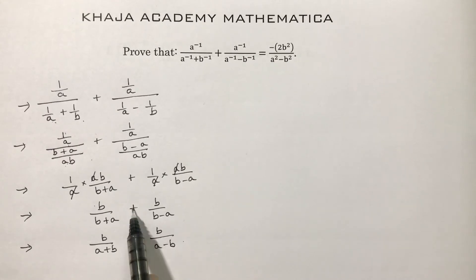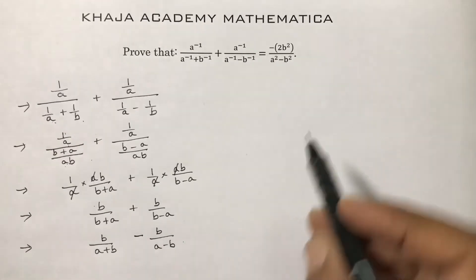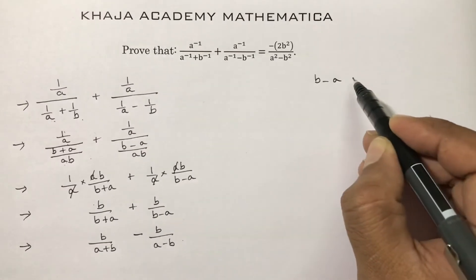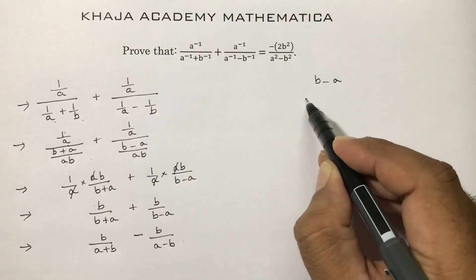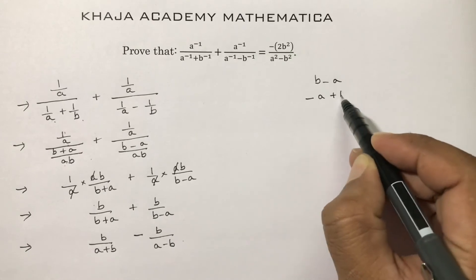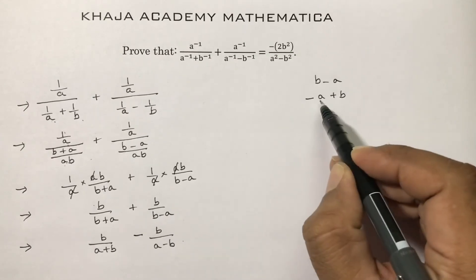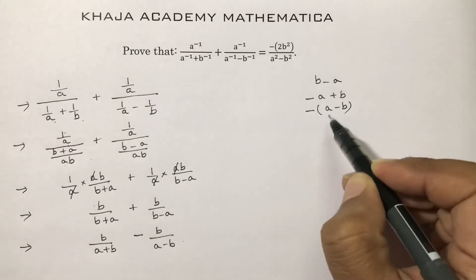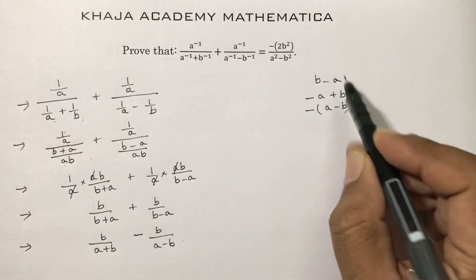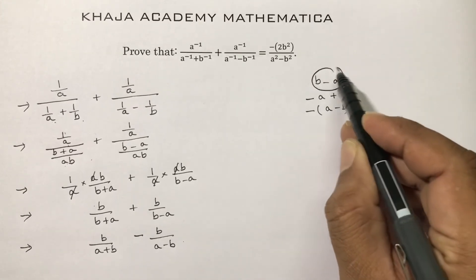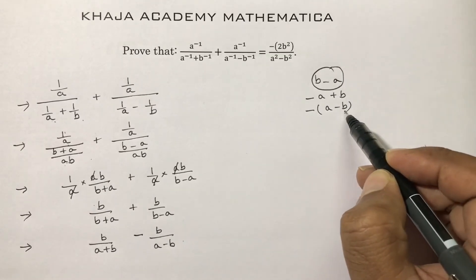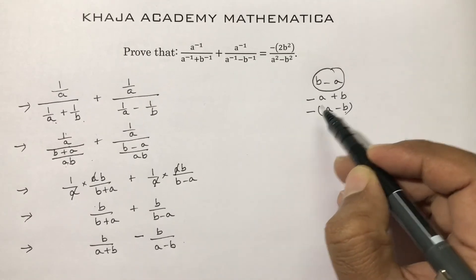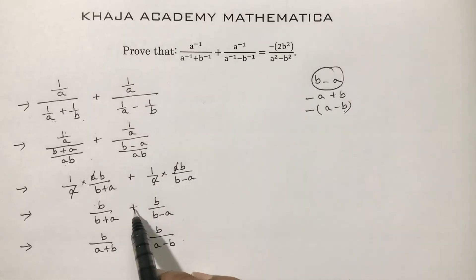When you write b − a as a − b, you get a minus sign common outside. For example, b − a equals −(a + b)... actually b − a equals −a + b, and taking minus common gives −(a − b). So b − a written as a − b puts a minus sign outside, and minus into plus gives minus.